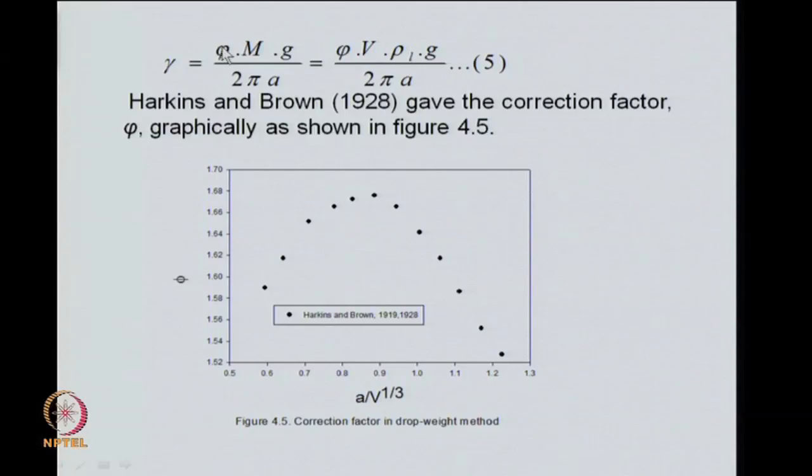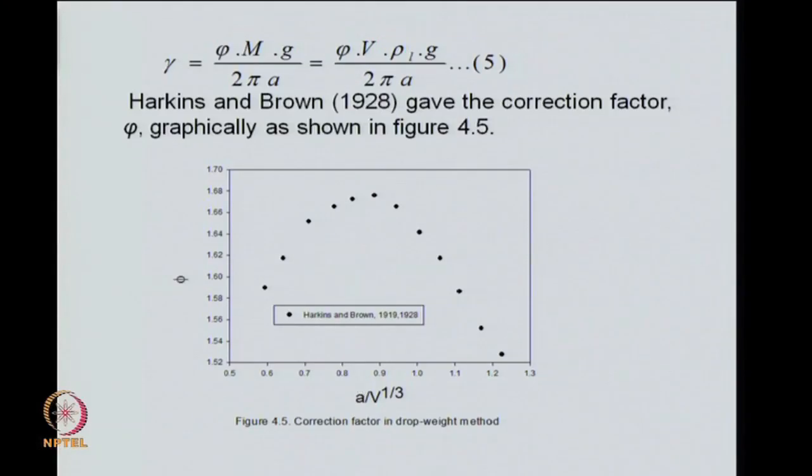The correction factor is incorporated here. Now, you have other ways of measuring surface tension. For pure liquids we know surface tensions and then you actually experimentally find out what M and V are. Once you know that and you do it for several liquids and find out what the correction factor is for several tips of the capillary or different radii and then you get the data on phi versus A by V to the power 1 by 3. The much older method ring method is one which is common standard and standard surface and interfacial tensions have been known for much longer time.